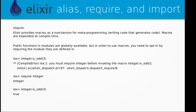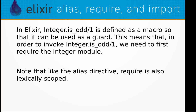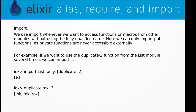In Elixir, Integer.is_odd is defined as a macro so that it can be used as a guard. This means that in order to invoke Integer.is_odd we need to first require the Integer module. Note that like the alias directive, require is also lexically scoped.